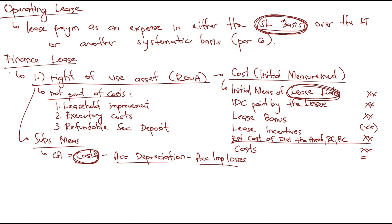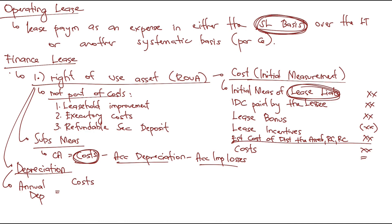For depreciation of the right-of-use asset, if the problem is silent, use the straight-line method. Annual depreciation equals cost minus residual value, divided by the useful life of the asset. However, you need to know which residual value and which useful life to use, as there are three types of residual value: guaranteed, unguaranteed, and residual value at the end of the useful life.